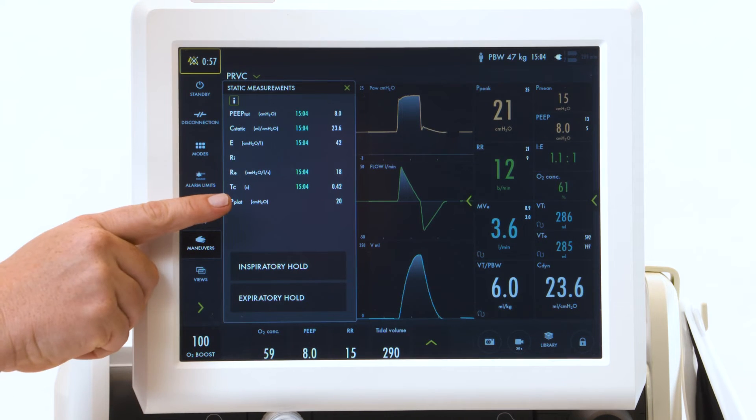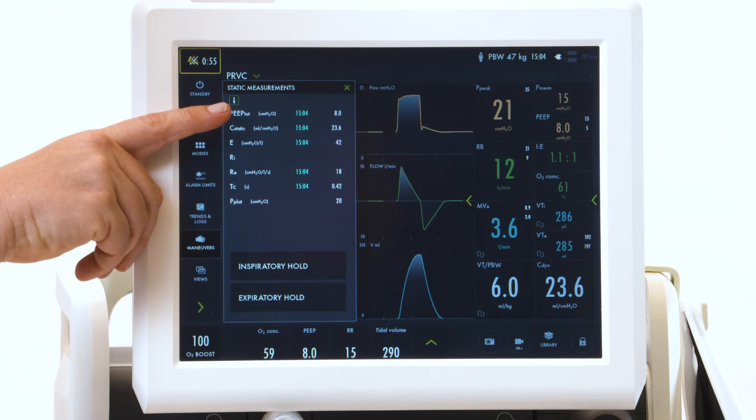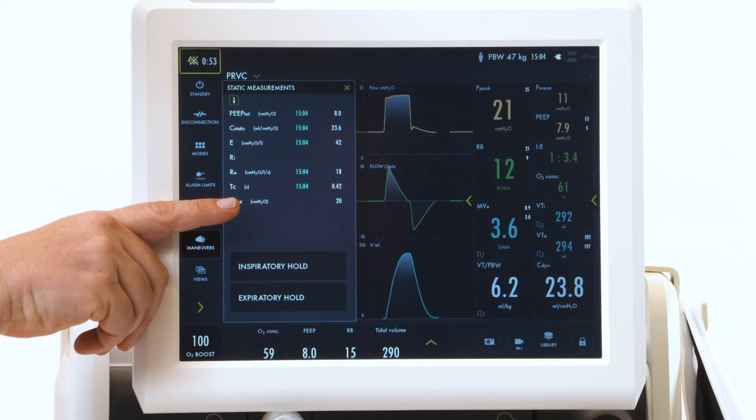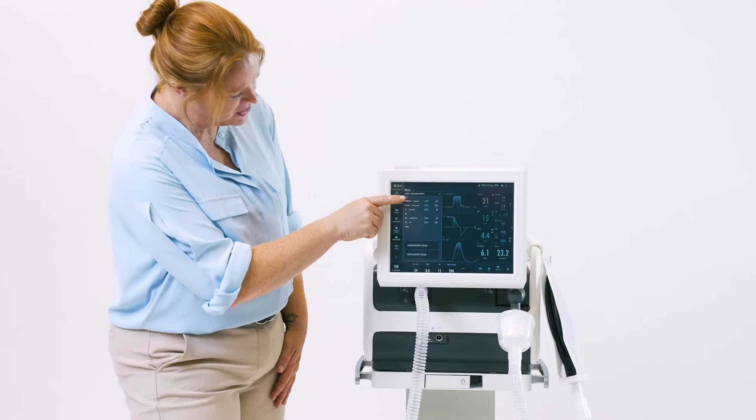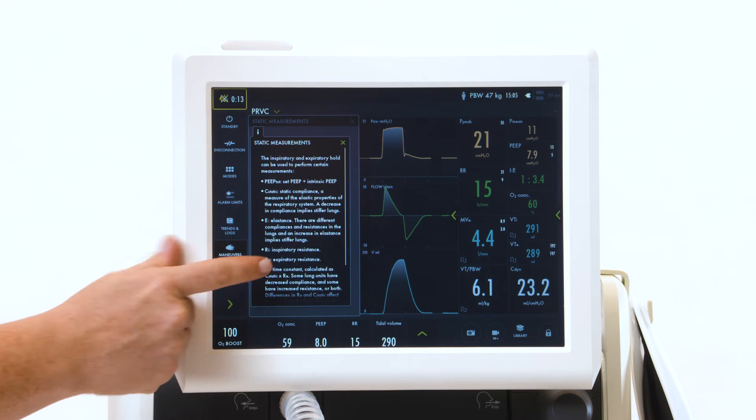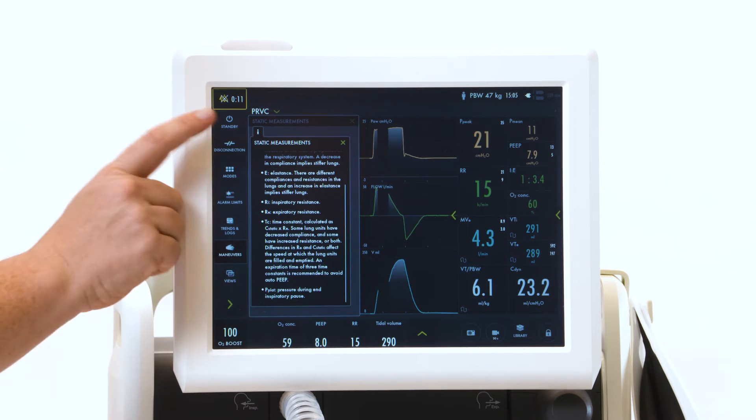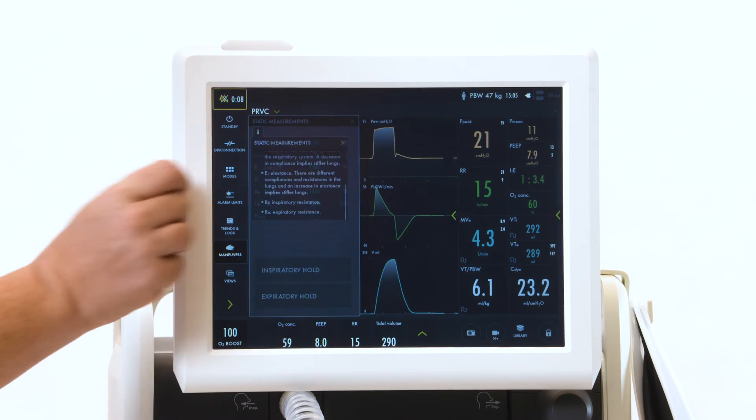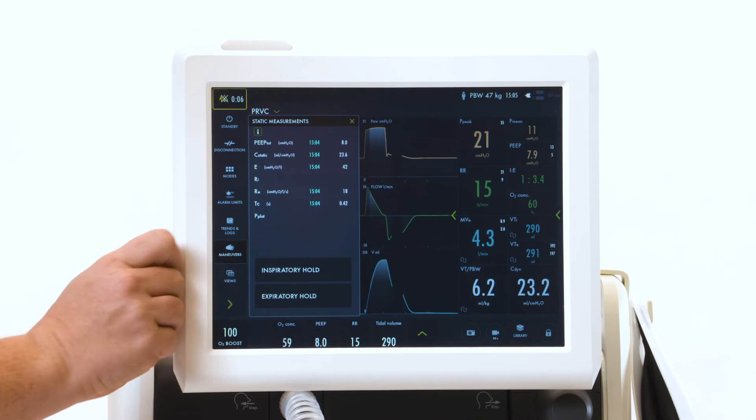Your numbers will appear, including your total PEEP, your plateau pressure, and your static compliance. Under your eye is the values. You can scroll to get the definitions of all the values which are measured underneath your measurements.